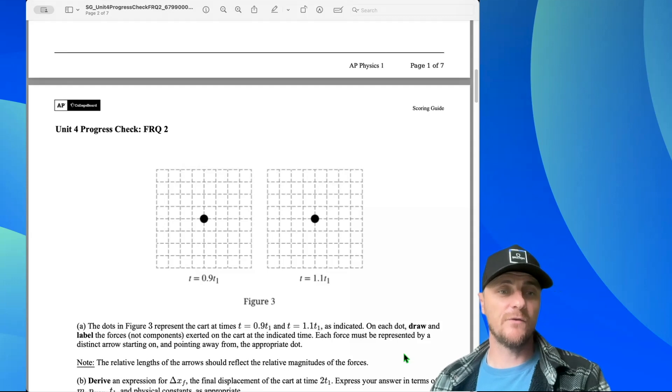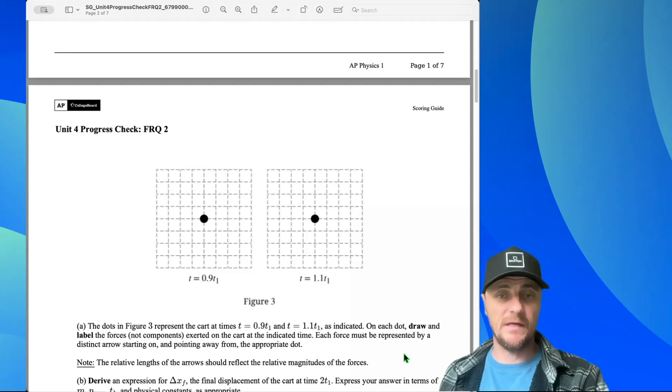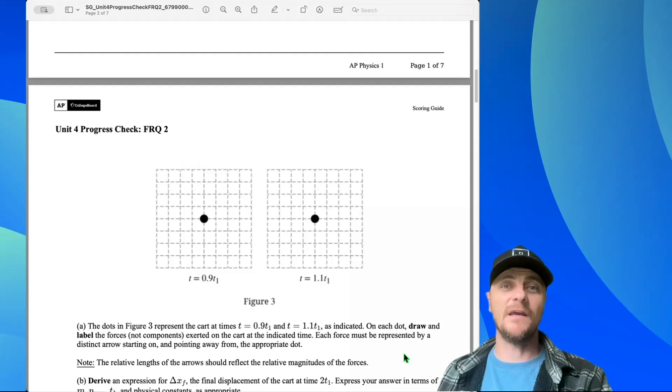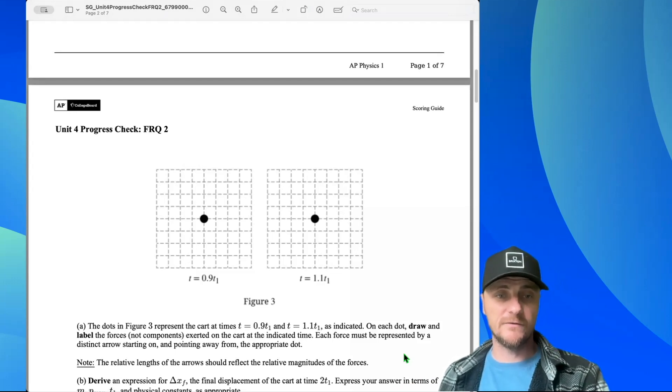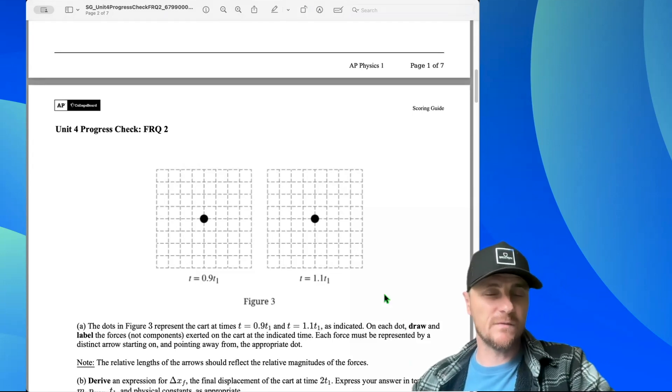The dots in Figure 3 represent the cart at times t equals 0.9t1 and t equals 1.1t1 as indicated. On each dot, draw and label the forces, not components, exerted on the cart at the indicated time. Each force must be represented by a distinct arrow starting on and pointing away from the appropriate dot. Note the relative lengths of the arrows should reflect the relative magnitudes of the forces.